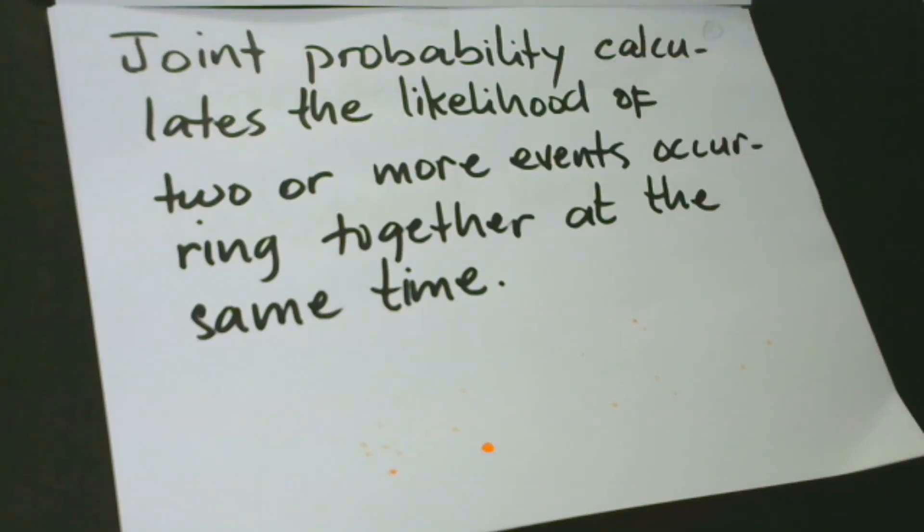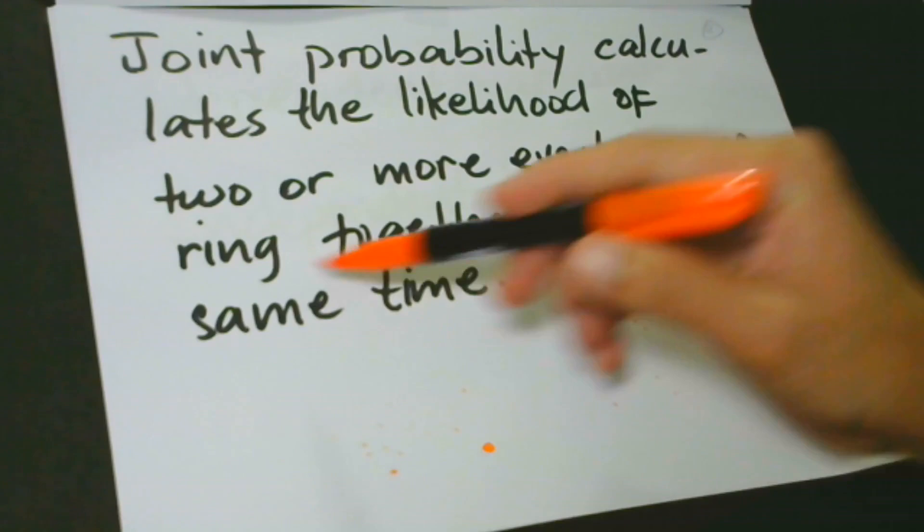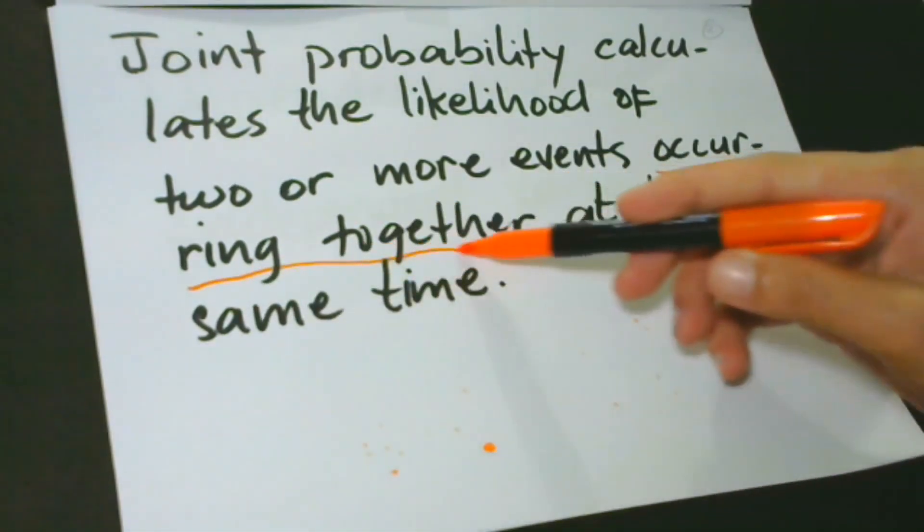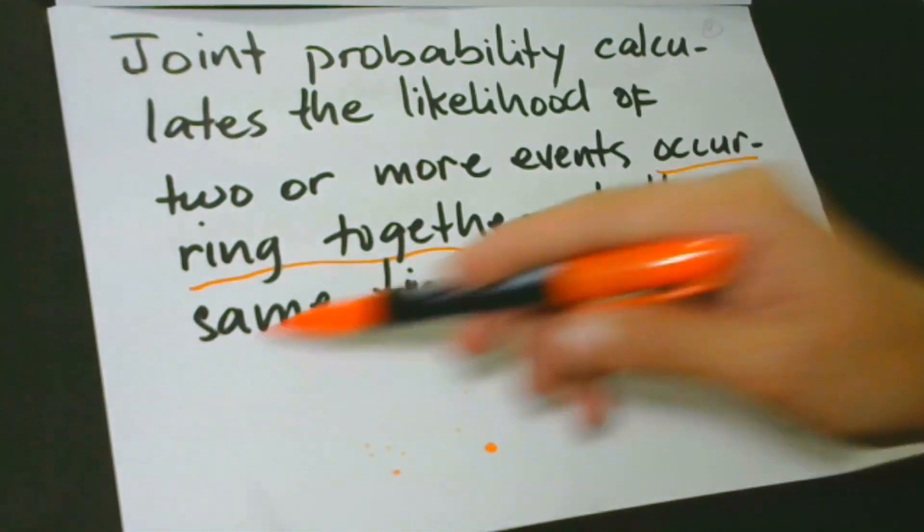Let's define first what joint probability is for better discussion and understanding. Joint probability calculates the likelihood of two or more events occurring together at the same time. The keywords here are occurring at the same time.